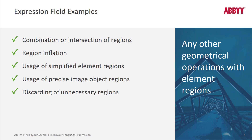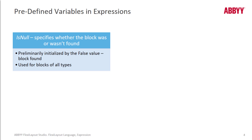We have a lot of power, and because it's script we can do conditional arguments, which is more difficult to do in the GUI environment in general. We can talk about predefined variables in expressions. The isNull variable specifies whether the block was found or wasn't found, and this helps us make conditional arguments, which is easy to do with scripting.